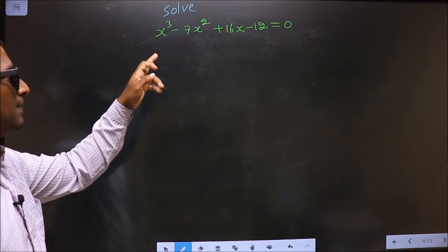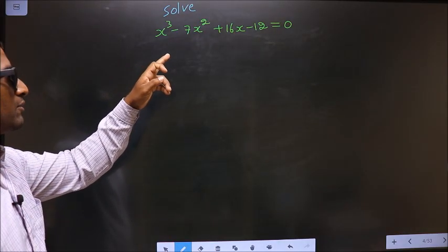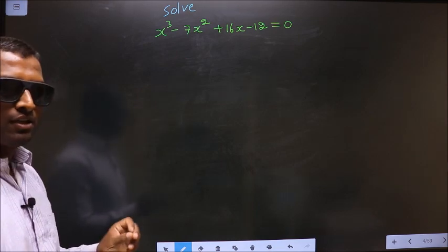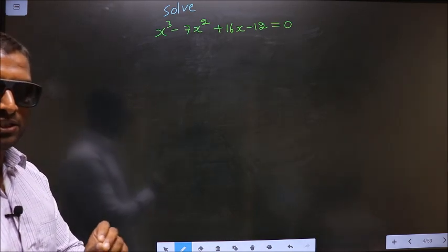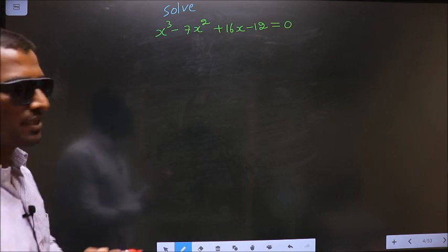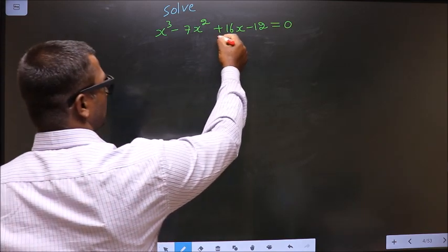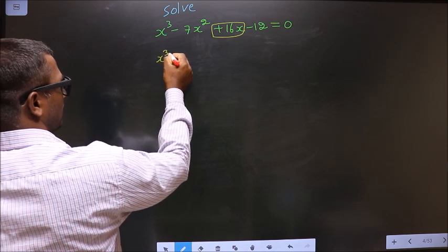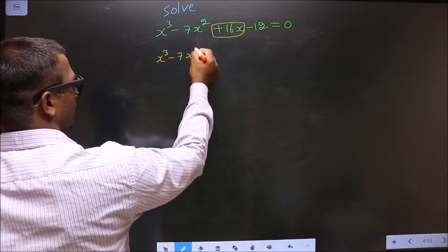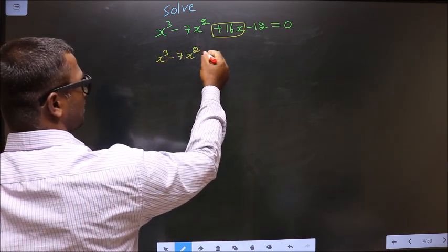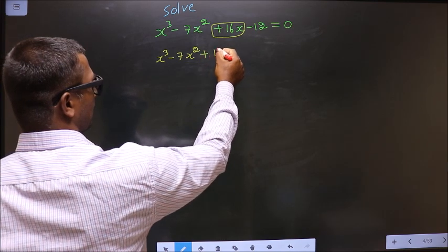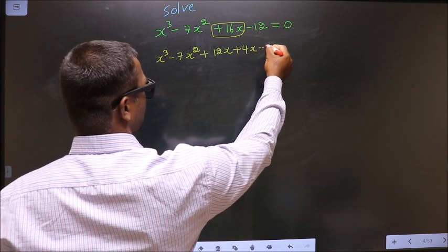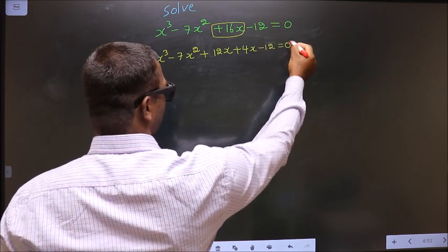Solve x cubed minus 7x squared plus 16x minus 12 equal to 0. To solve this, we should change the x term, that is plus 16x. So x cubed minus 7x squared — in place of plus 16x, now you should write plus 12x plus 4x minus 12 equal to 0.